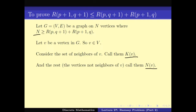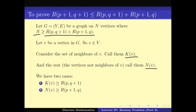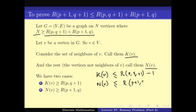Given that n is at least this sum, we have two cases. Either |K(V)| ≥ R(P, Q+1) or |N(V)| ≥ R(P+1, Q). To see these are the only two cases: if neither holds, then |K(V)| ≤ R(P, Q+1) − 1 and |N(V)| ≤ R(P+1, Q) − 1.